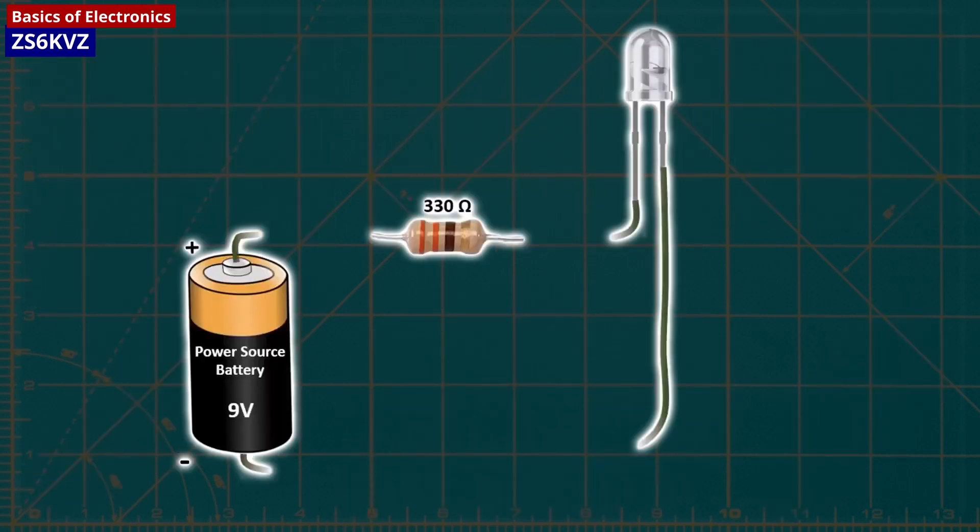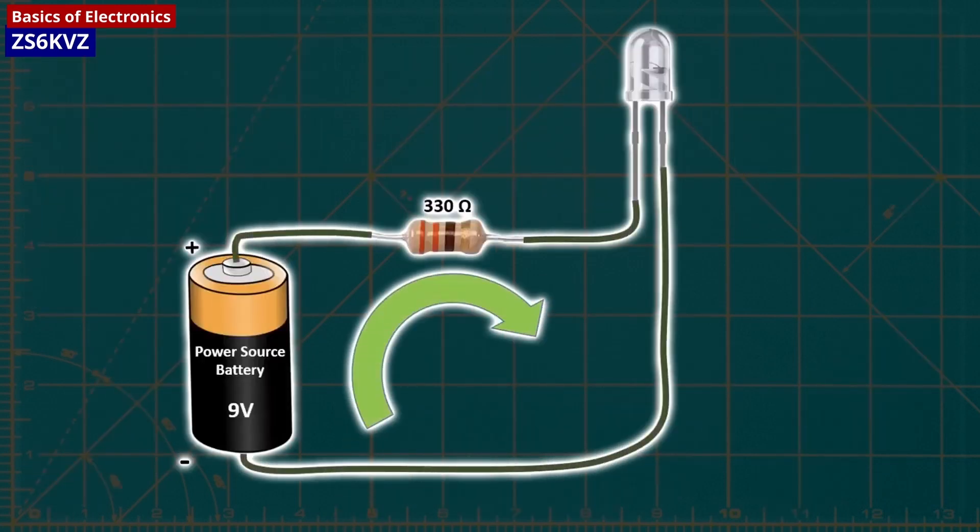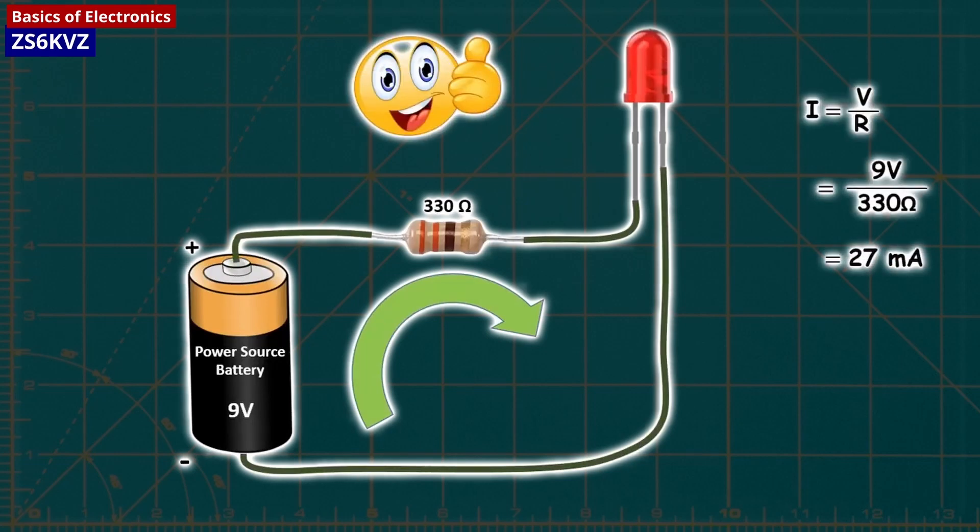LEDs create a voltage drop in the circuit, but typically do not add much resistance, and a resistor in series is required to prevent the circuit from shorting.